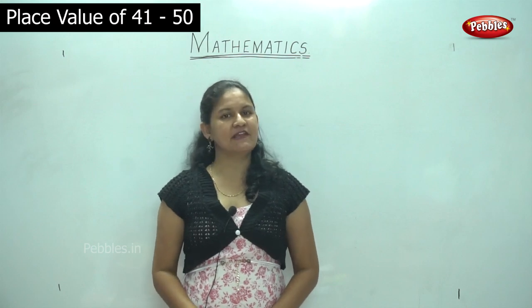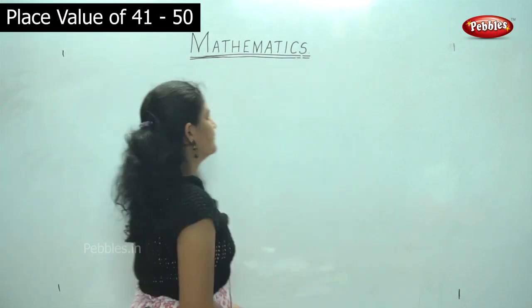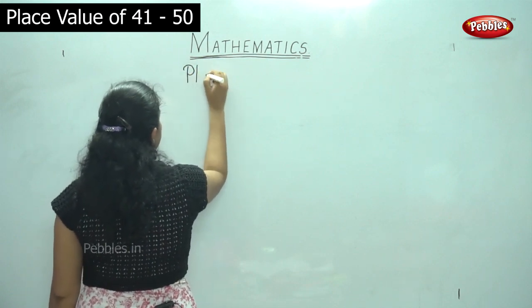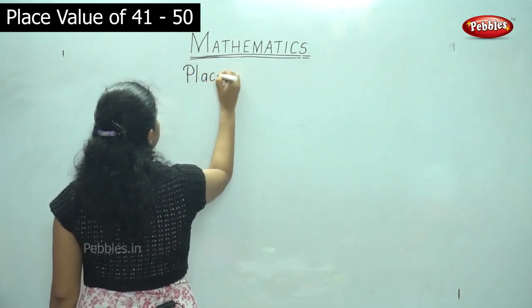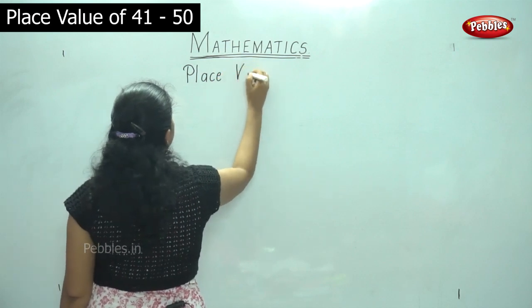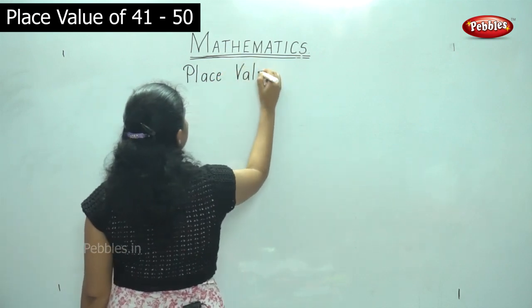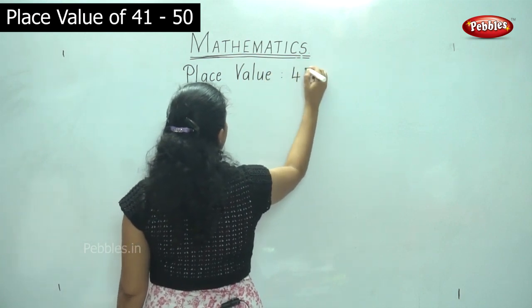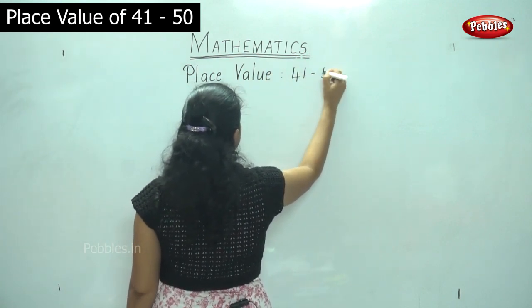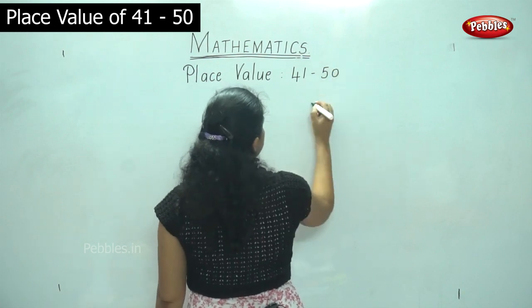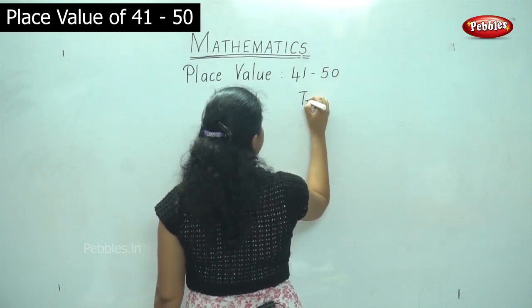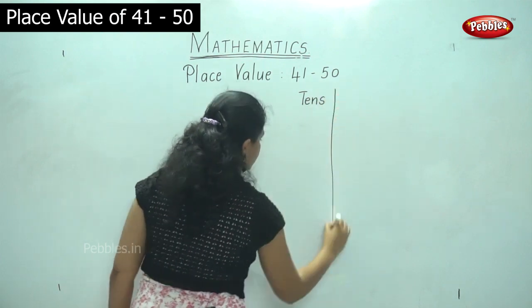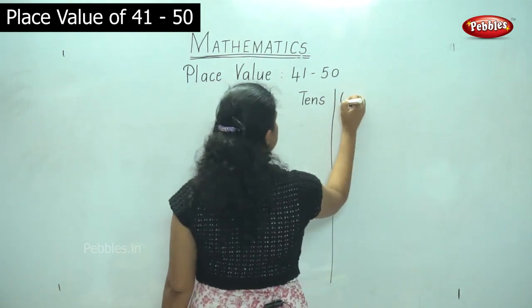Now we will be seeing the place value for the numbers 41 to 50. So we have the tens house and the ones house.